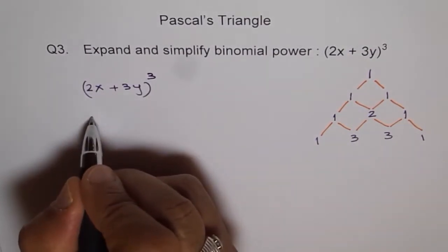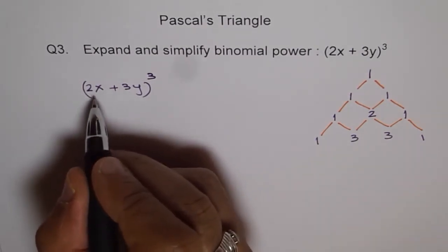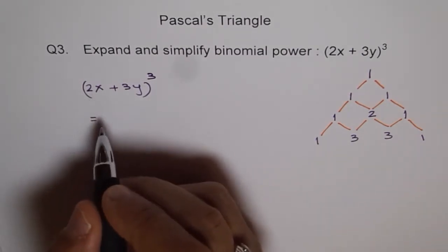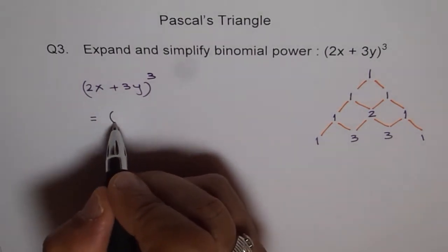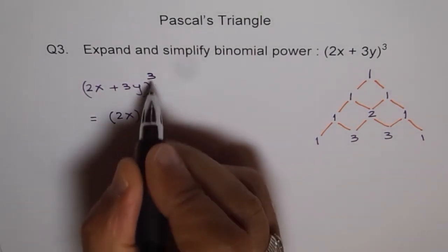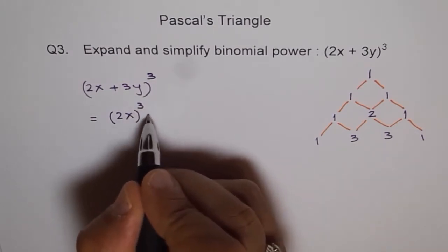So we get (2x + 3y)³. We can write this as equal to, so 2x is our first, is a. The coefficient is 1, so we get just (2x)³, plus.